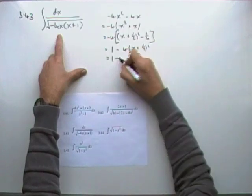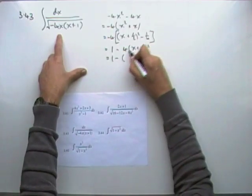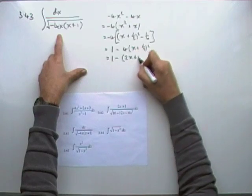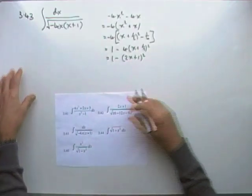Put the 4 on the side. If it's 4 outside, it would have to be 2 inside. So it's double the inside, so it's just (2x + 1)². And that's just perfect.